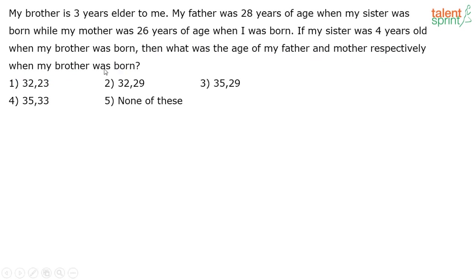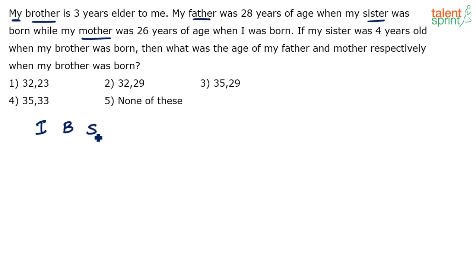So as you can see, we have a family of five members here. Let's use variable 'i' for the first person speaking, 'b' for brother, then father, sister, and mother — so i, brother, sister, father, and mother: a family of five members.